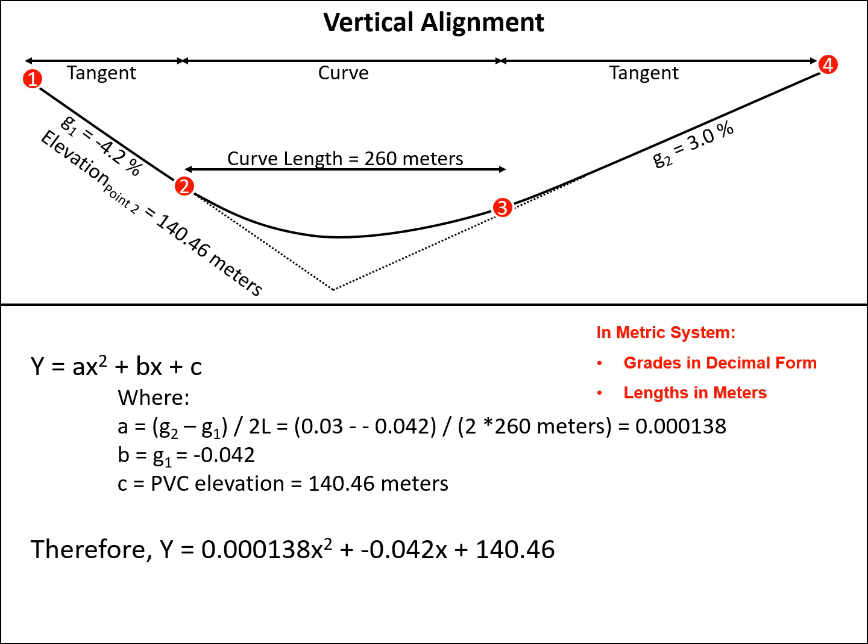To develop our parabolic equation, we need to determine the characteristics A, B, and C, and then we can define our overall parabolic equation for this particular curve. And again, grades should be in decimal form and lengths in meters. So A equals G2 minus G1 divided by 2 times L, which would be 0.03 minus negative 0.042 divided by 2 times 260 meters.